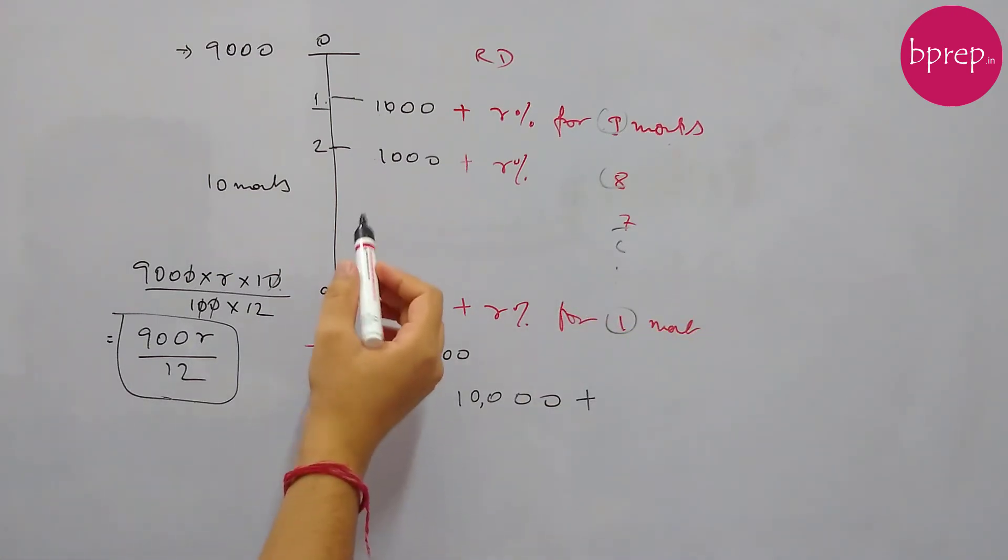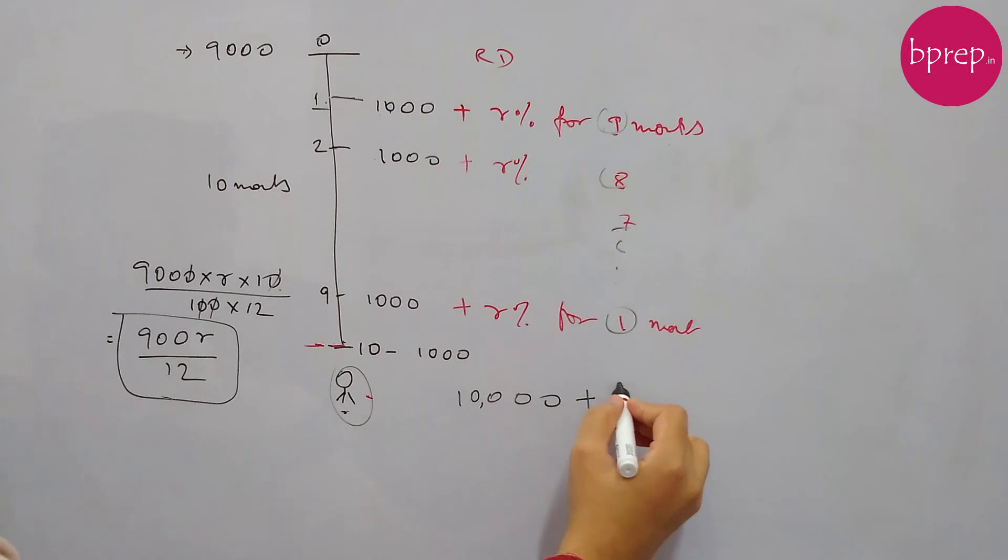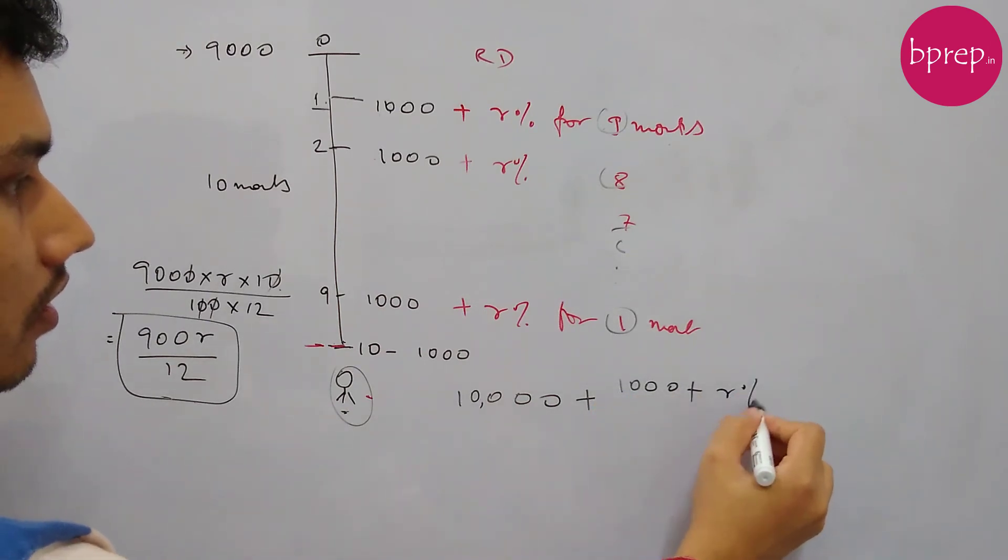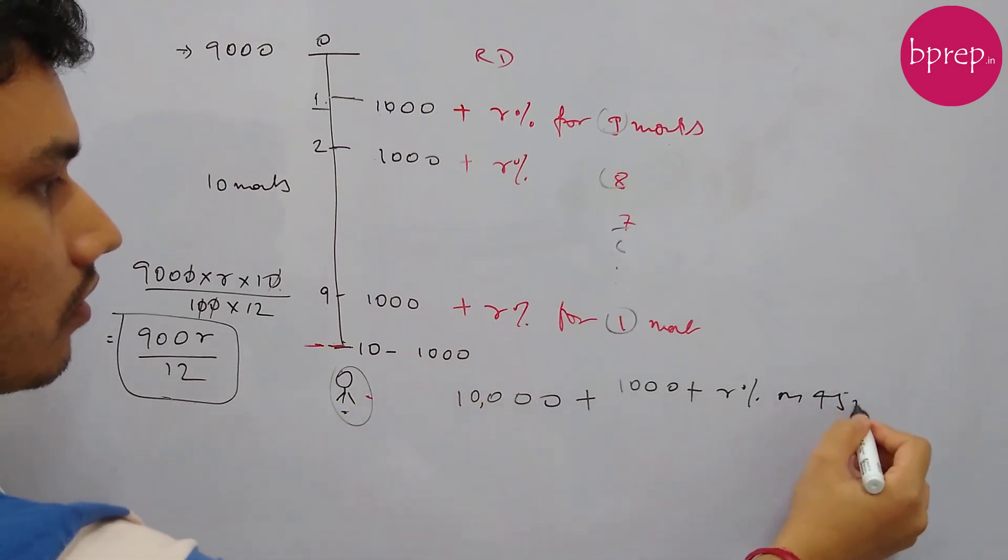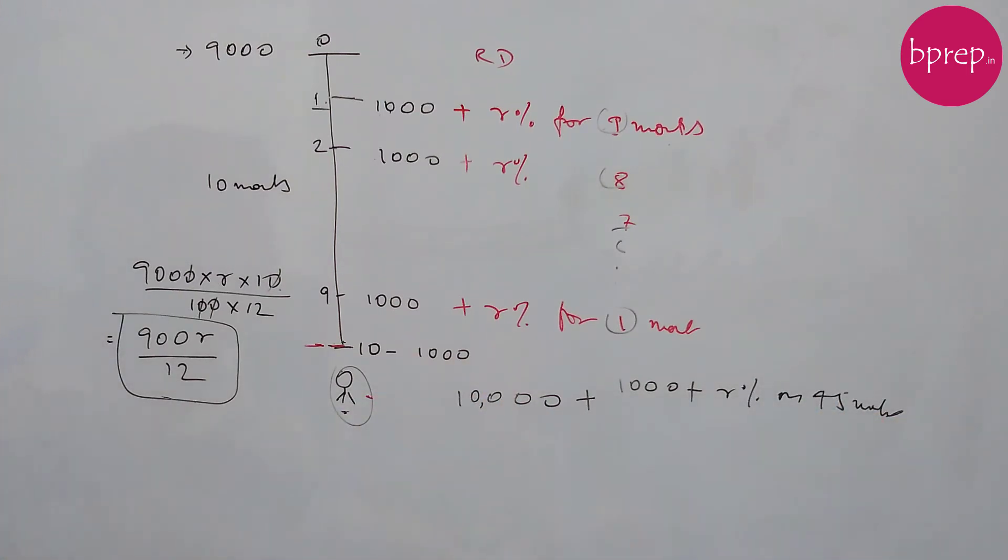So can we say this as 1000 plus R% on 1000 for 45 months? So how we have got 45? 9, 8, 7 - if you add up till 1 it's 45.